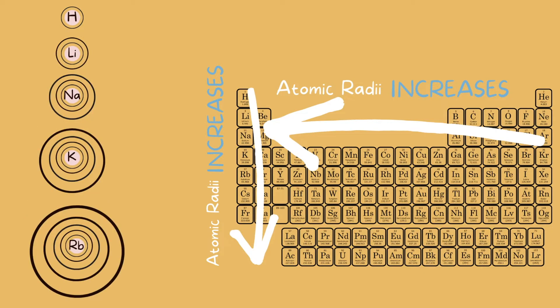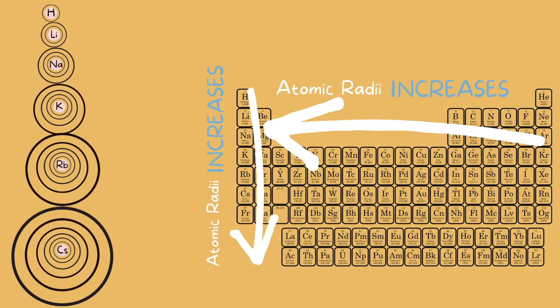Period 5 we have rubidium with five shells, period 6 we have cesium with six shells, and on period 7 we would have francium with seven shells. So we can see that the atoms grow larger as they go down the periodic table.